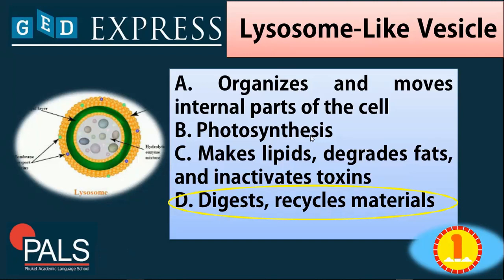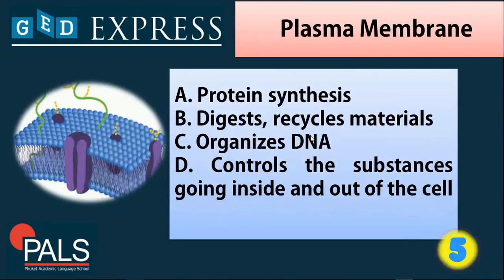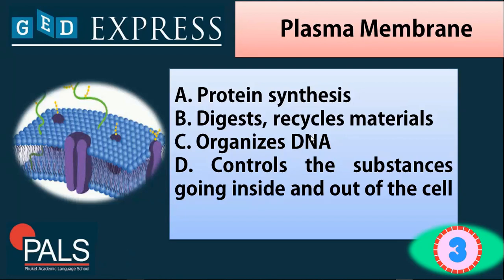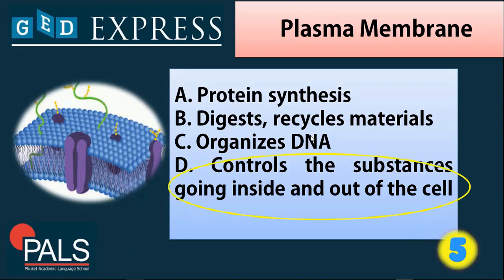Next we have the plasma membrane. The function is — A. Protein synthesis, B. Digests and recycles materials, C. Organizes DNA, or D. Controls the substances going inside and out of the cell. The answer is very obvious — that would be D, which controls the substances going inside and out of the cell.